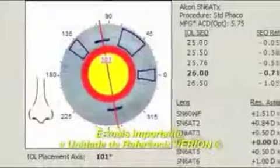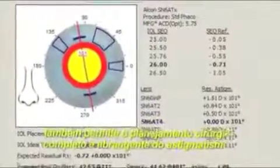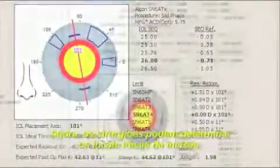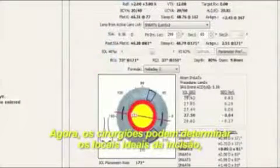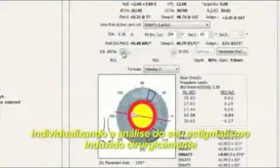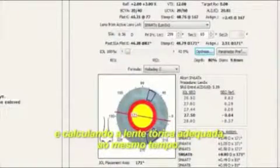Most importantly, the Varyon reference unit also provides comprehensive astigmatism management. Surgeons can now determine optimum incision locations to individualize surgically induced astigmatism and toric lens powers at the same time.